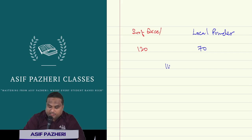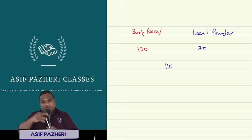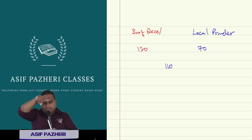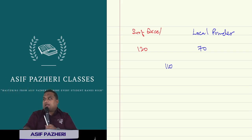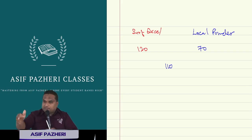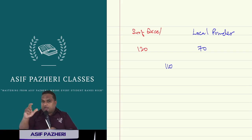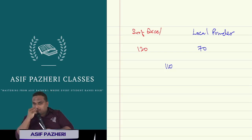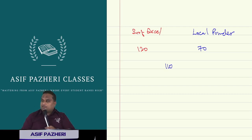He will mix the local soap powder into Surf Excel, and he has a calculation: the cost should be Rs. 110. The 1 kg normal pack of Surf Excel is sold in the market at Rs. 160. Now he is making the pack at Rs. 110, which he will sell at Rs. 120. Shop owners will sell at Rs. 140. So it is lower than Surf Excel, but customers feel it smells the same, looks like Surf Excel, and it is cheaper — so people will buy this soap powder.